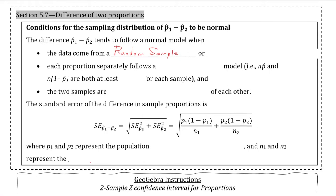First, we have that the data comes from a random sample or a randomized experiment. Secondly, we have that each proportion separately follows a normal model, which means that n times p-hat and also n times 1 minus p-hat are both at least 10 for each sample. Which means we would do the same thing for each sample and proportion for each of those groups.